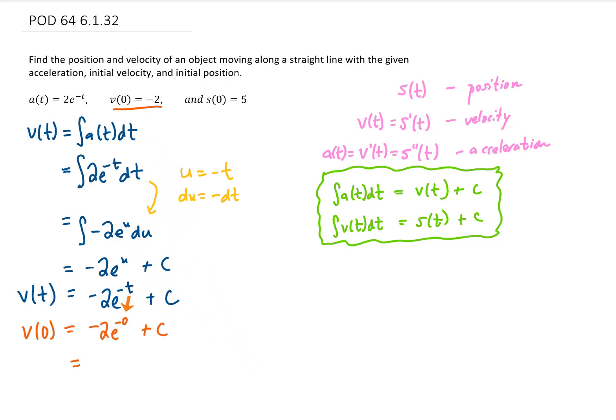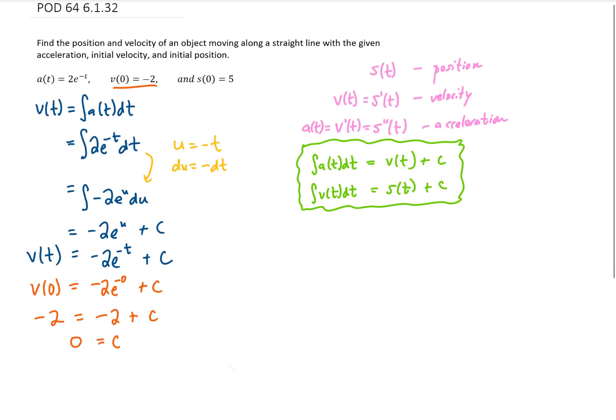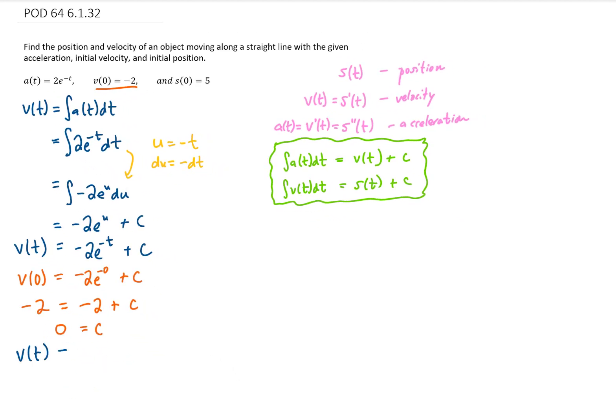We're going to plug t equals 0 into this function. e^0, really anything to the 0 power is just 1. And we know that v(0) equals negative 2, so I'll plug that in right here. Solving then for c gives us c equals 0. And our final velocity function can be written as v(t) equals -2e^(-t) plus 0. That is great.